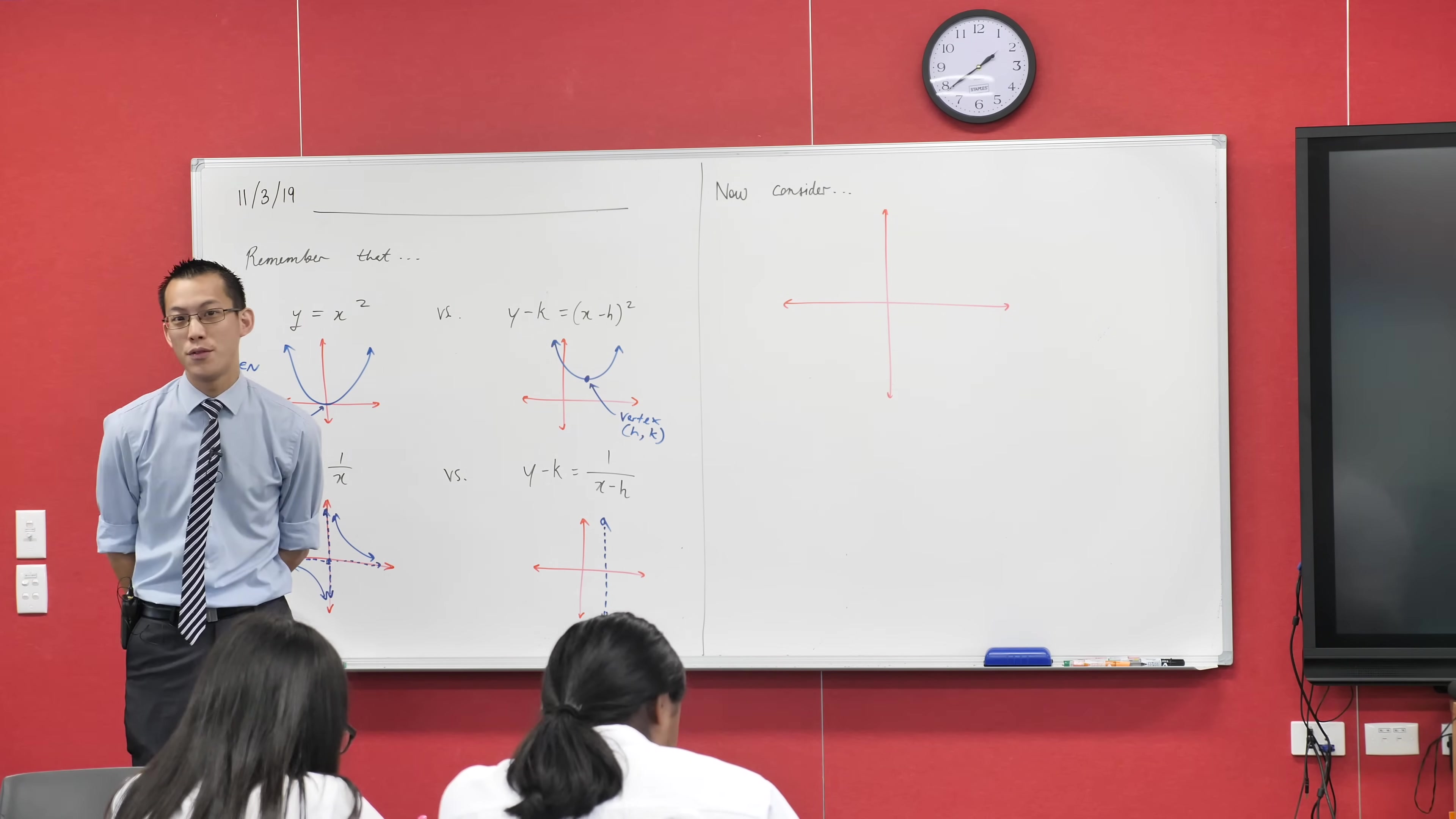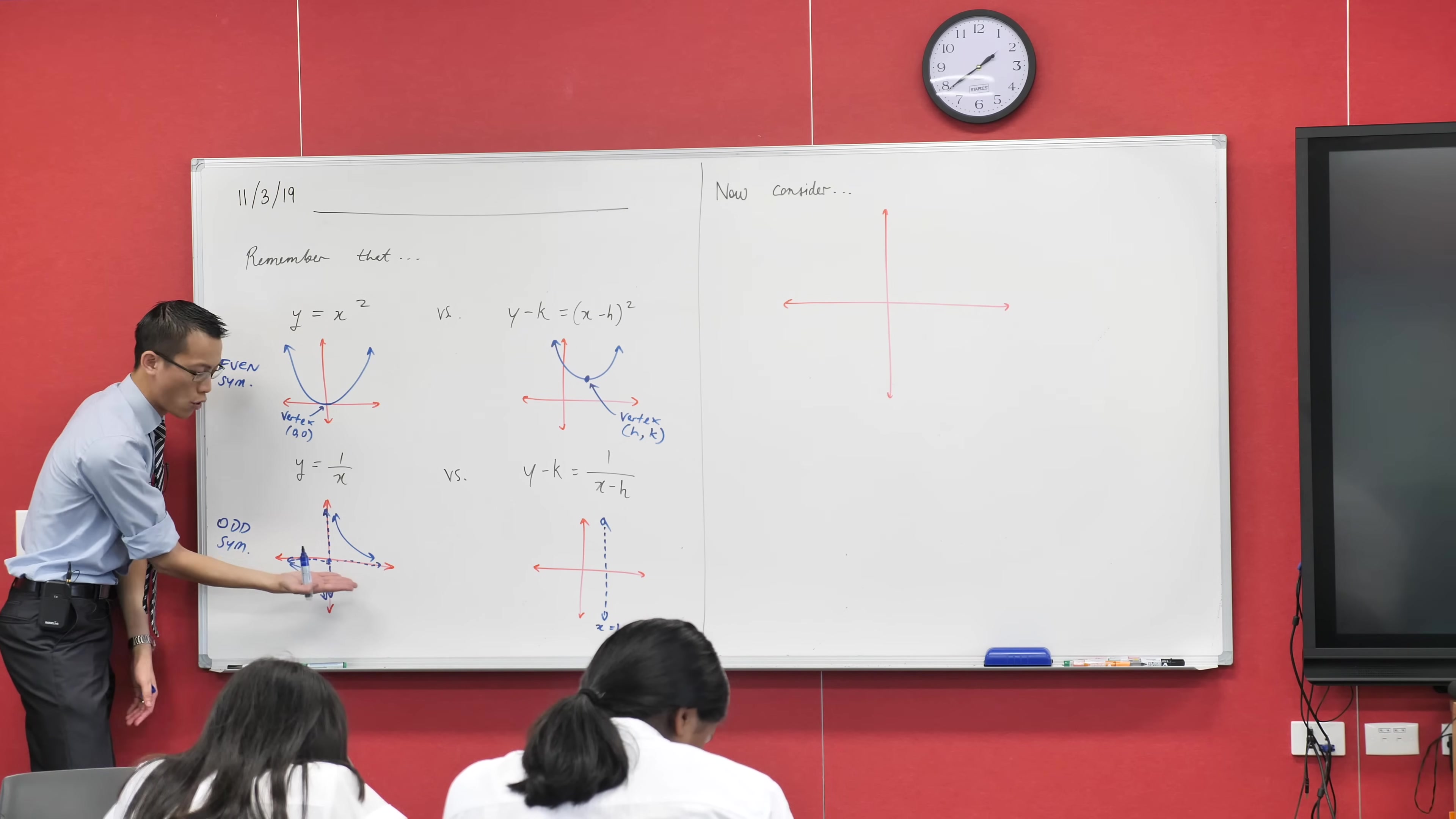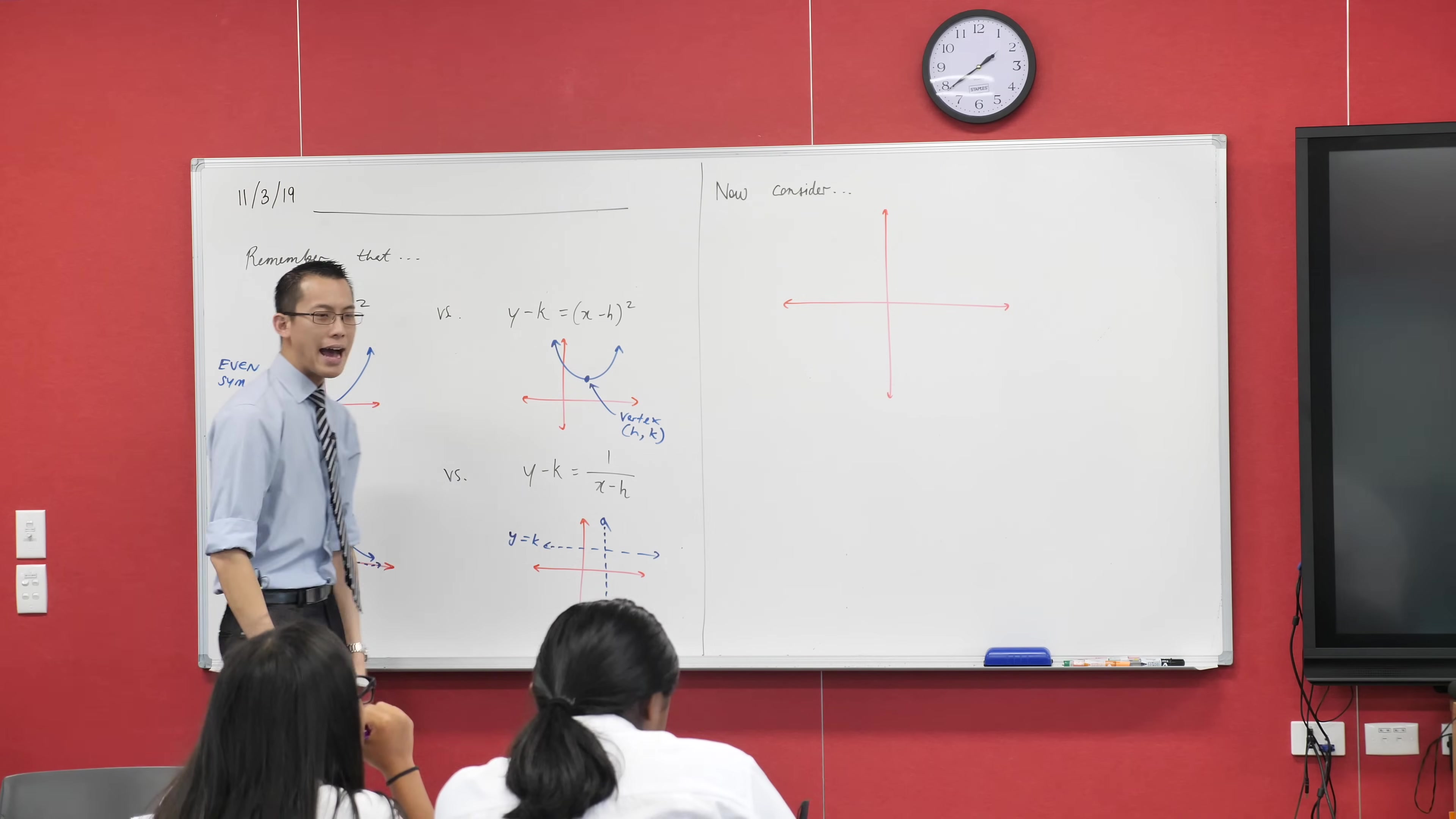But what value of x would make that denominator zero? h. x is not allowed to equal h. So in the same way that x equals zero was an asymptote here, x equals h will be an asymptote here. Let me put that in, I might as well do it sort of vertically in line like that. So this is the vertical line x equals h. Now not only am I moving left and right, I'm also moving up and down. How many units am I moving up and down? I'm going to move k units up or down.